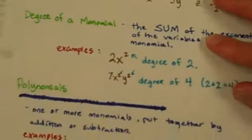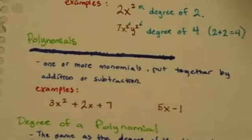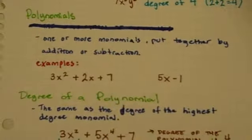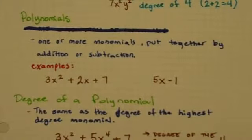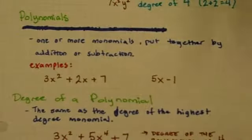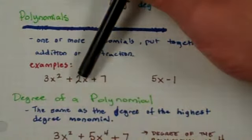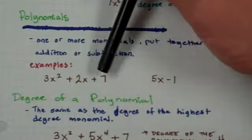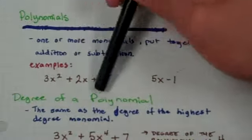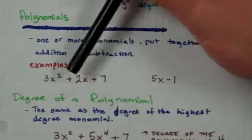Now finally on to polynomials. Polynomials. One or more monomials put together by addition or subtraction. So for example if I have 3x squared that's a monomial plus 2x another monomial plus 7 another monomial. All of that together is a polynomial.